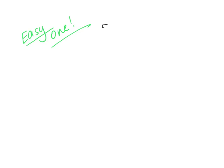Let's start with an easy addition problem for the jump strategy. Going back to our success criteria, we need to partition the second number into standard form. So for 58 plus 27, I will keep 58 the same and partition 27 into 20 plus 7 — that's the standard form partition.